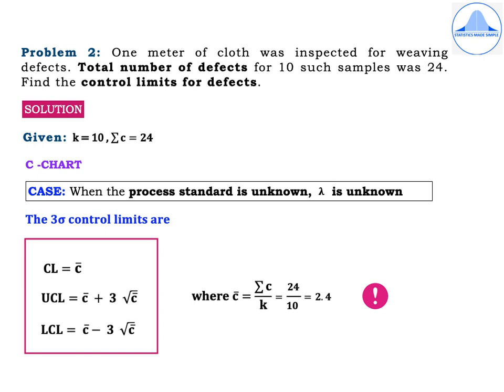Problem 2. One meter of cloth was inspected for weaving defects. The total number of defects for 10 such samples was 24. Find the control limits for defects. Since the word defect is used, it is based on the C chart.